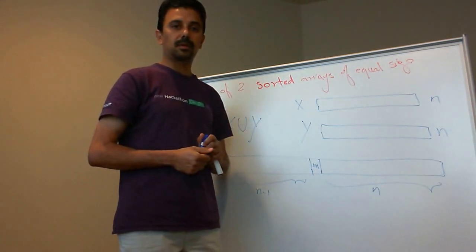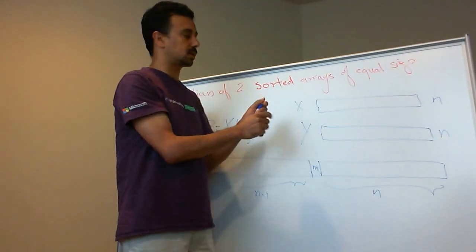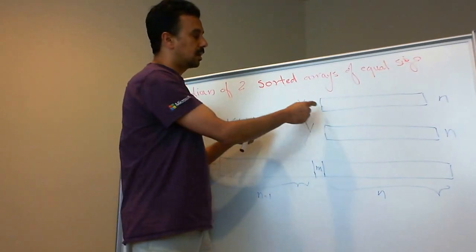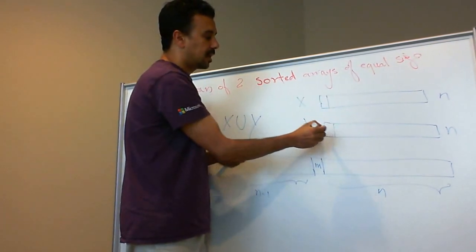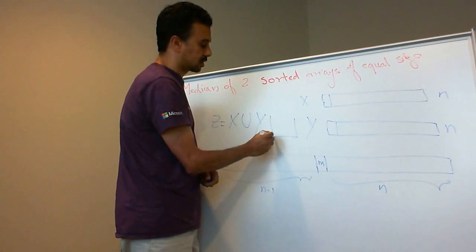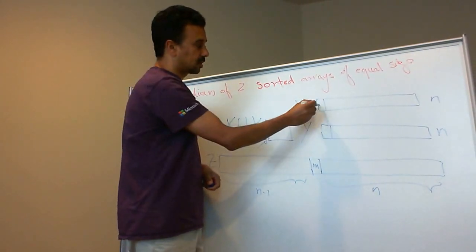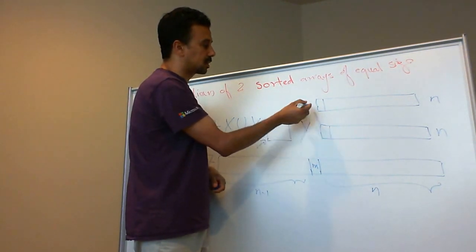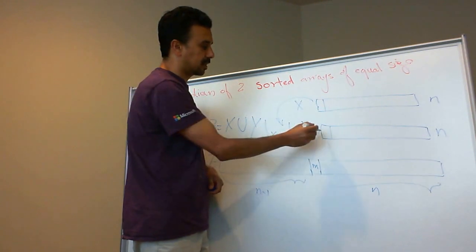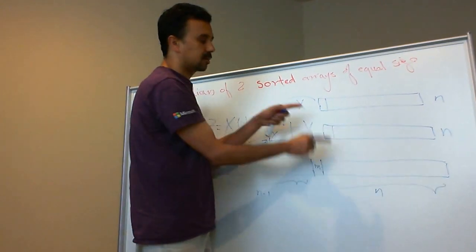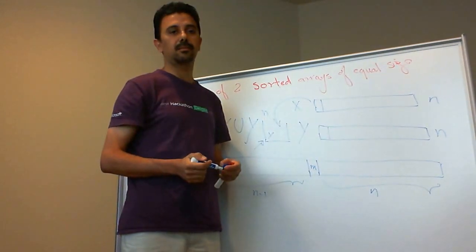One way to solve this problem is by applying the merge sort concept. Looking at x and y, the smallest elements would be at the beginning of each array. I would compare them, and the smaller of both elements I would put in the bucket. After n elements, I would know that I have reached the median.